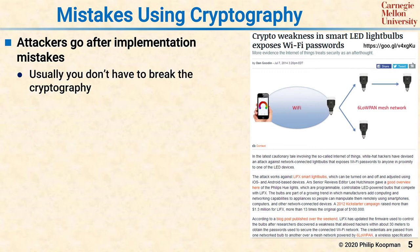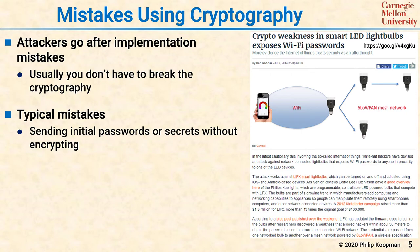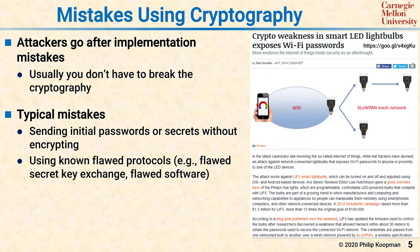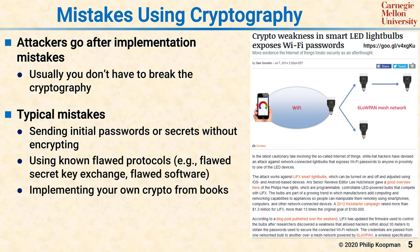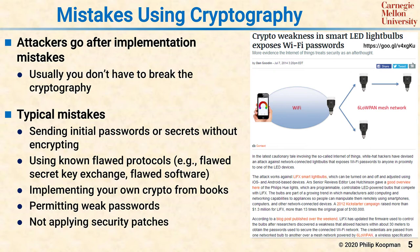Typical mistakes for using cryptography include: sending initial passwords or secrets without encrypting or authenticating to make sure only legitimate devices are getting the information; using known flawed protocols, such as flawed secret key exchange algorithms and flawed software; implementing your own cryptography from a secret algorithm or even from books — typing in code from a book often introduces subtle mistakes; permitting weak passwords or weak keys; and not applying security patches, leaving systems running for months or years with vulnerabilities that could have been patched.